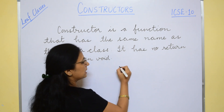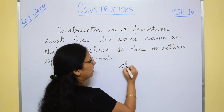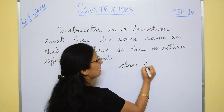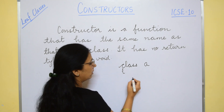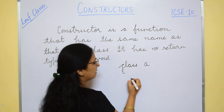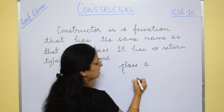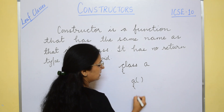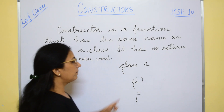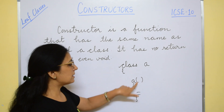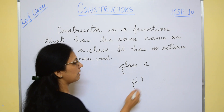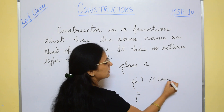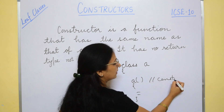For example, suppose the class name is 'a' and here we write the constructor with the same name 'a'. This is the body of the constructor — it has the same name as the class name and no return type is written. So, this is a constructor.